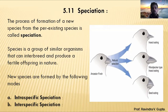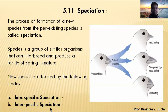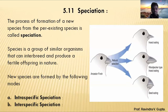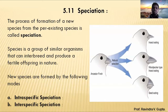New species are formed by the following modes. There are two types of formation of a new species: intraspecific speciation and interspecific speciation. Intraspecific means a similar type of species evolves into a different type of species. Interspecific speciation means two different species are crossed, and from that crossing a new organism is formed — for example, hybridization.